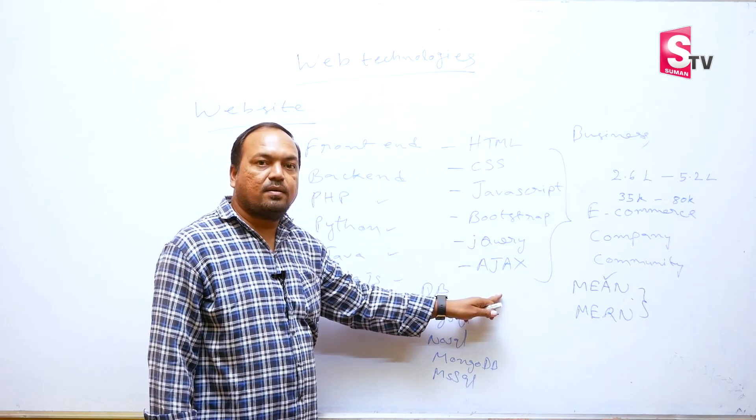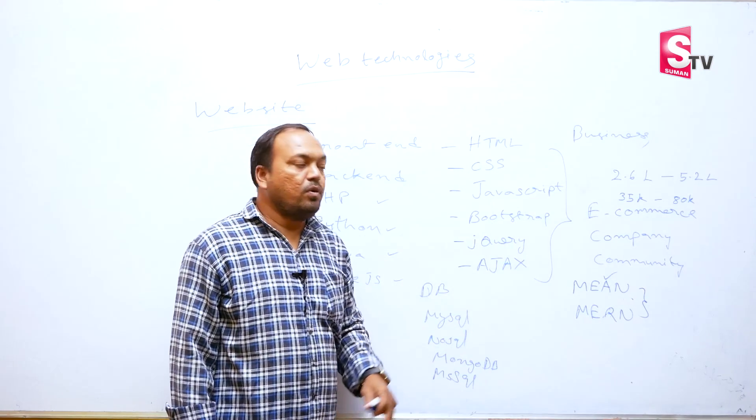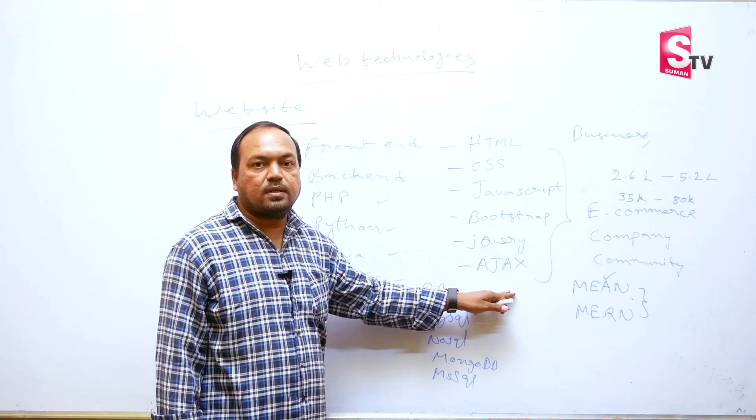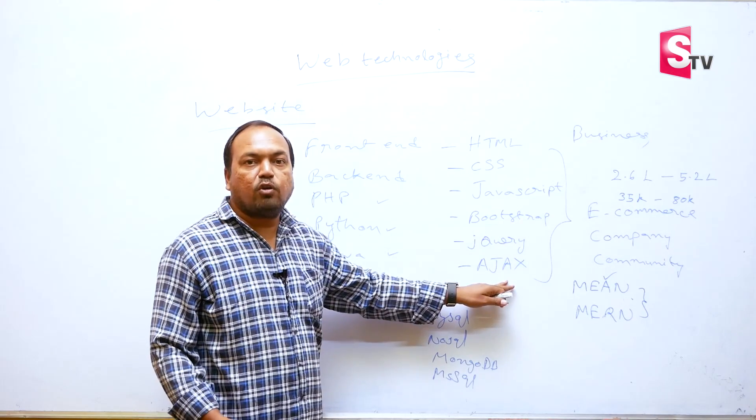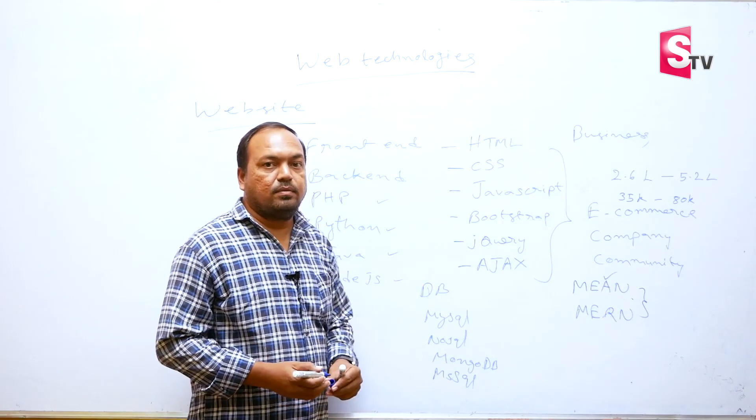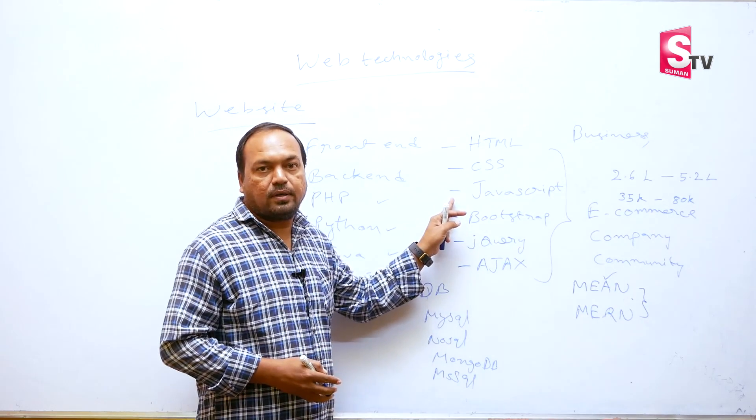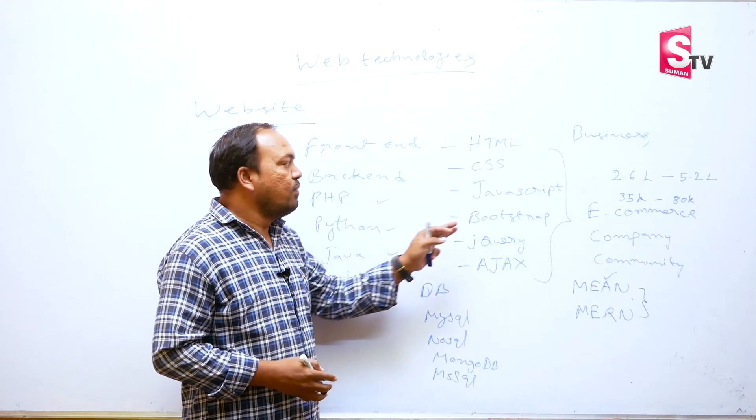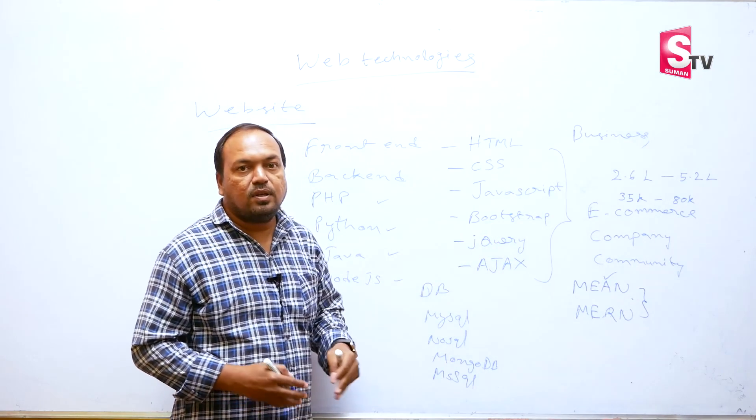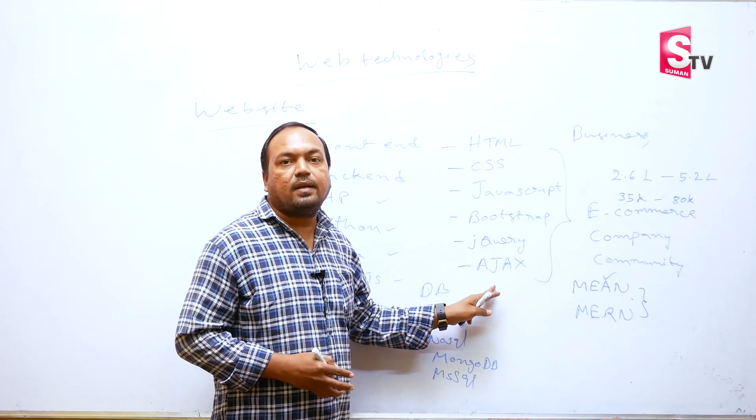Later, learn these six technologies - these six technologies are very important. Only six technologies, you'll have opportunities as a fresher. In projects, UI is valuable. UI developers, front-end developers - front-end coding is very important because user is satisfied with the front-end. Front-end is very important. Companies, out of hundred developers, sixty to seventy percent are UI developers. UI developers have good scope.